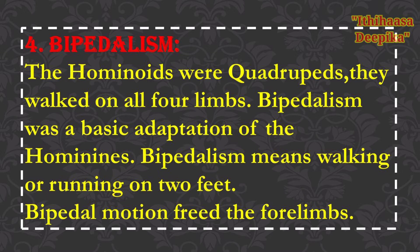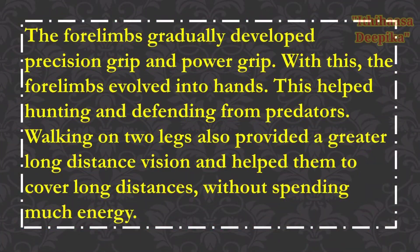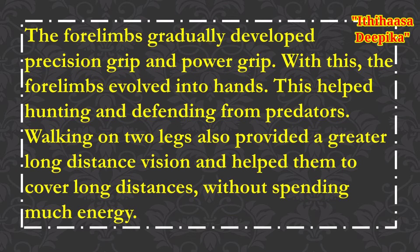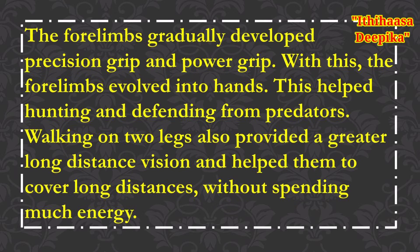Factor 4: bipedalism. The hominoids were quadrupeds, walking on all four limbs. Bipedalism — walking or running on two feet — was a basic adaptation of hominoids. Bipedal motion freed the forelimbs, which gradually developed precision grip and power grip, eventually evolving into hands. This helped in hunting and defending from predators. Walking on two legs provided greater long-distance vision and helped cover long distances without spending much energy.